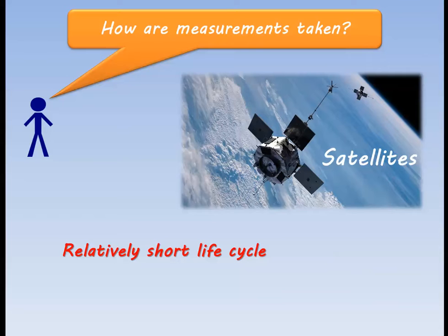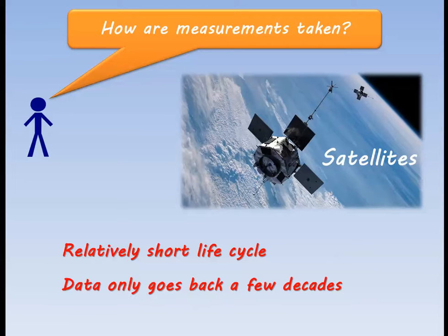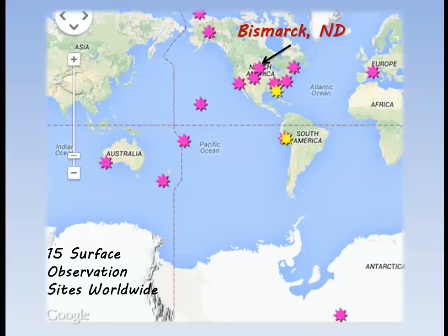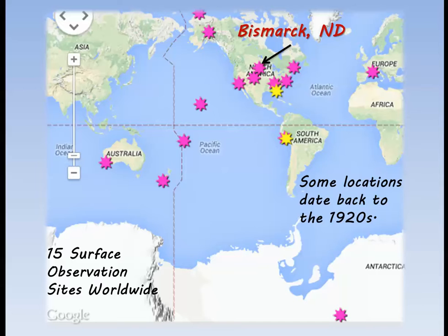Second, satellite measurements only go back so far. But where satellites fail, surface observations succeed. The purple stars represent 15 locations around the world that give regular ozone measurements. Some locations date back to as long ago as the 1920s. The site in Bismarck dates back to 1962.